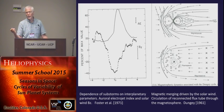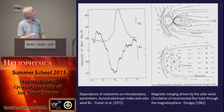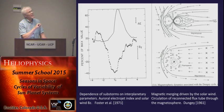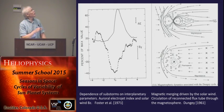Akasofu had written papers on substorms. The AE index, which you may now know, is a measure of geomagnetic activity at high latitude. This is the superposition of 54 events, and this is the Z component of the interplanetary magnetic field. This is one of the first papers that demonstrated the BZ relationship to substorms.